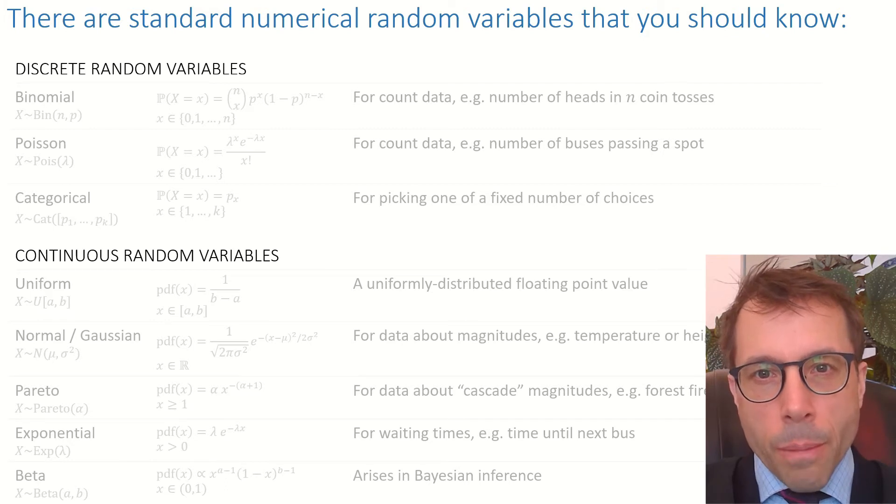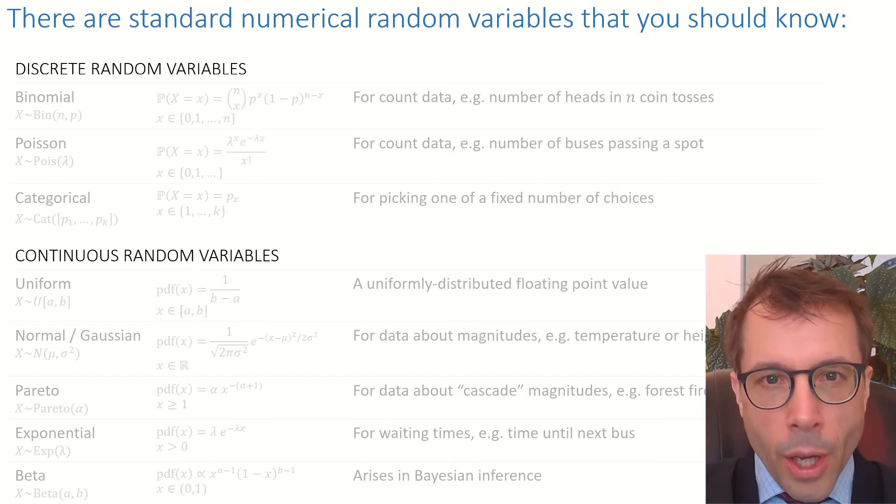Whereas a continuous random variable returns floating-point numbers and it has to have a smooth cumulative distribution function.